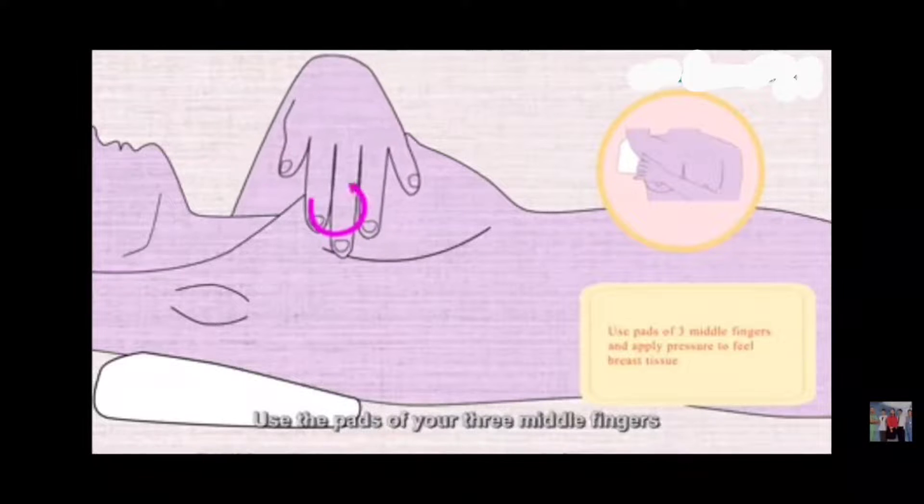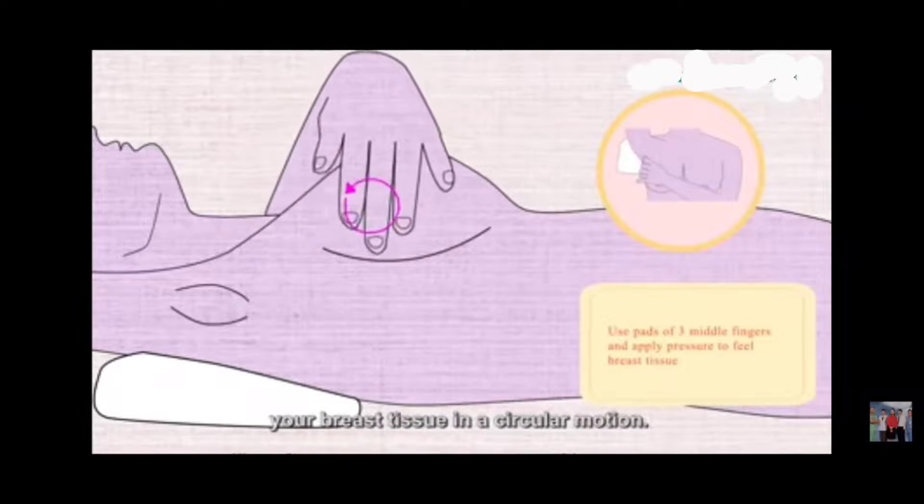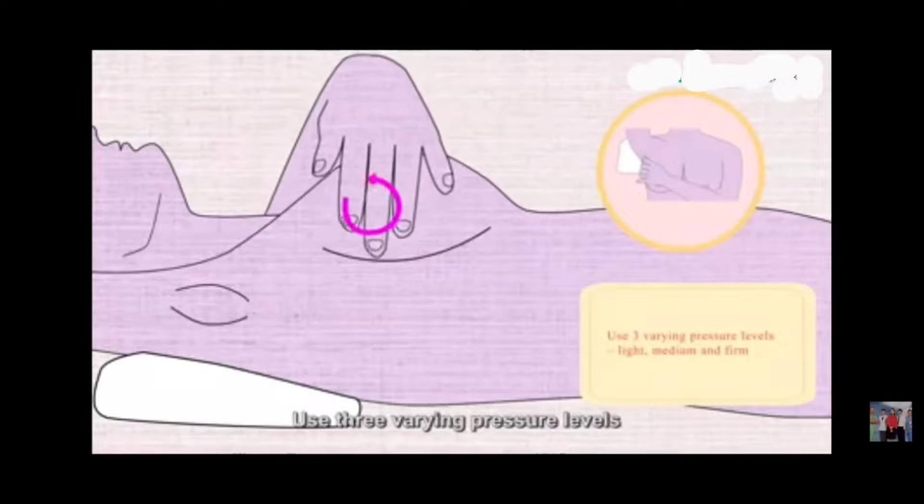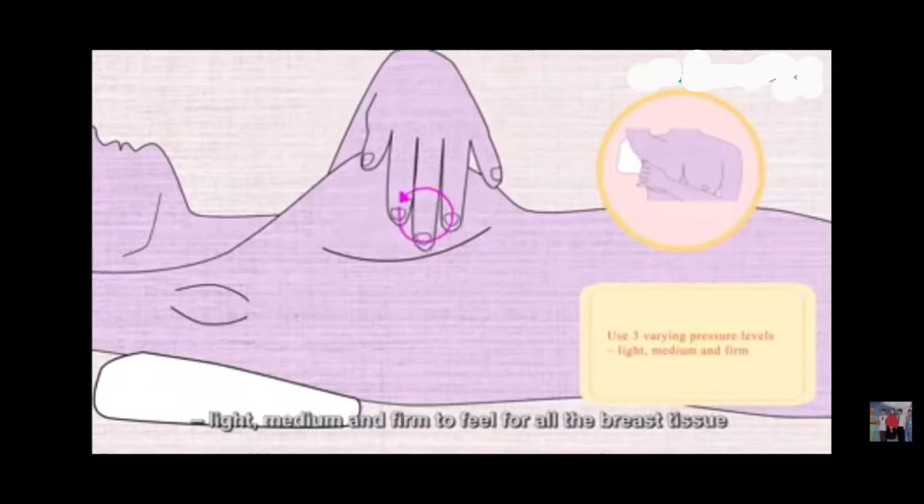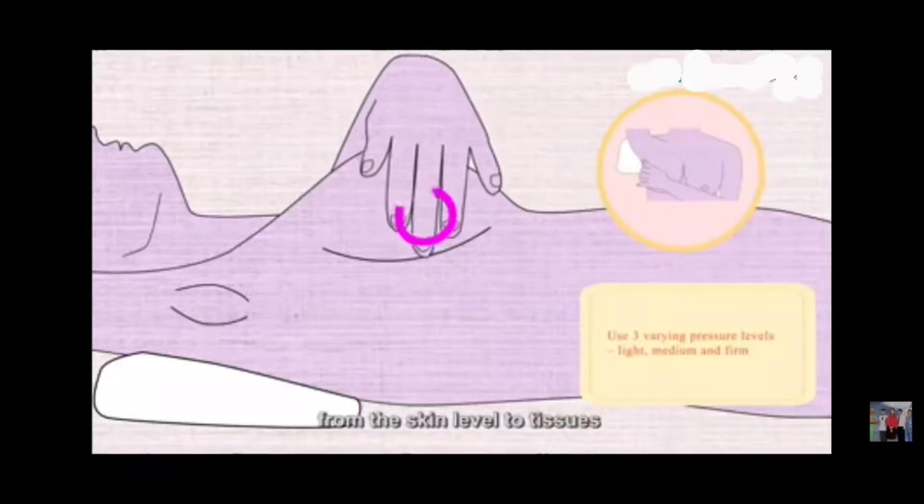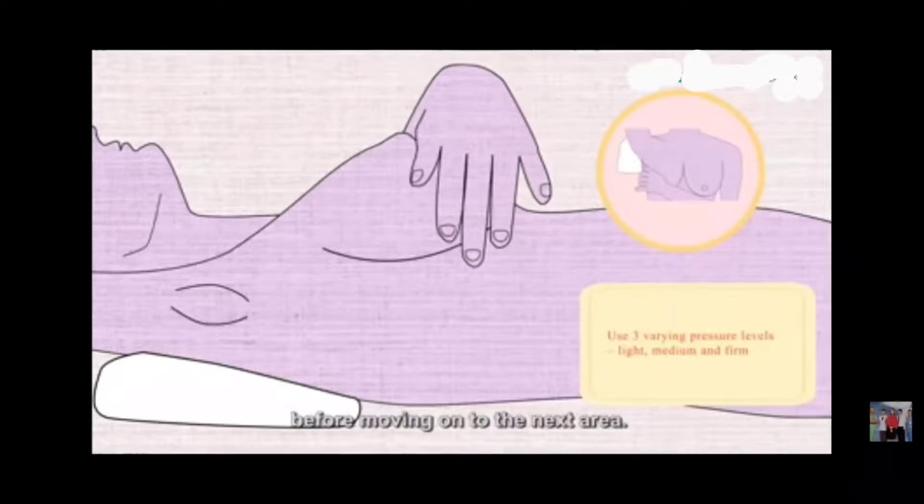Use the pads of your three middle fingers and apply pressure to feel your breast tissue in a circular motion. Use three varying pressure levels: light, medium, and firm to feel for all the breast tissue from the skin level to tissue closest to muscles and ribs before moving to the next area.